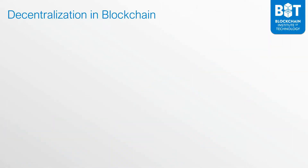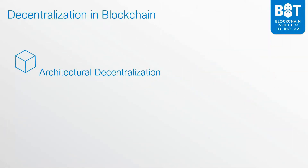In blockchain, there are three types of decentralization. The first one is architectural decentralization, which has to do with how many physical computers are actually running the system. If you're looking at an architecturally decentralized blockchain, you're looking at a blockchain that's running on multiple computers that are all running the same exact blockchain. But that's just one type of decentralization.